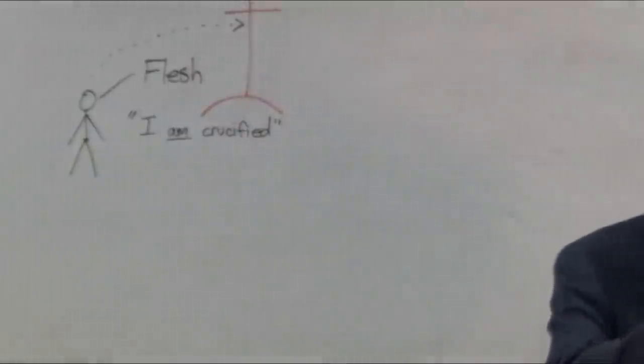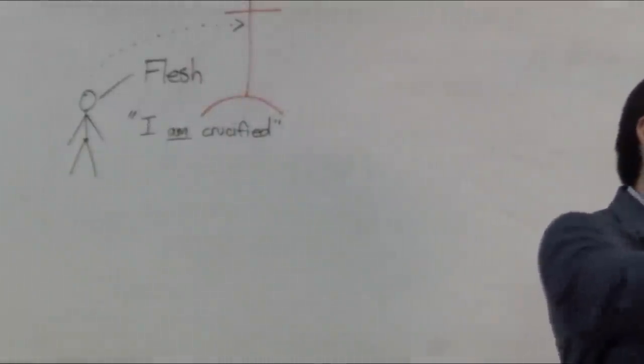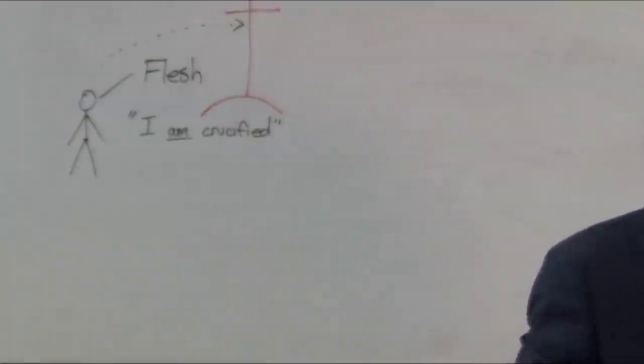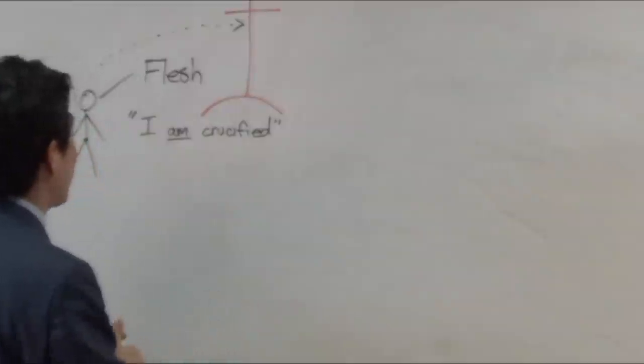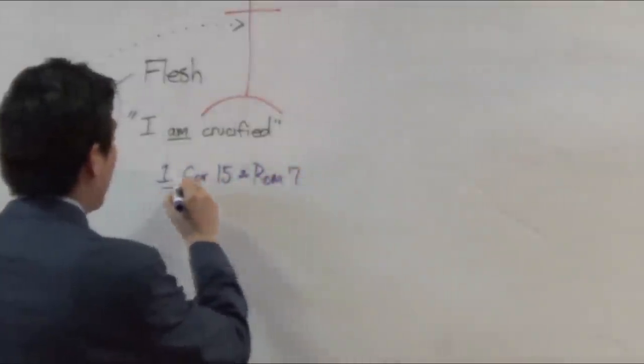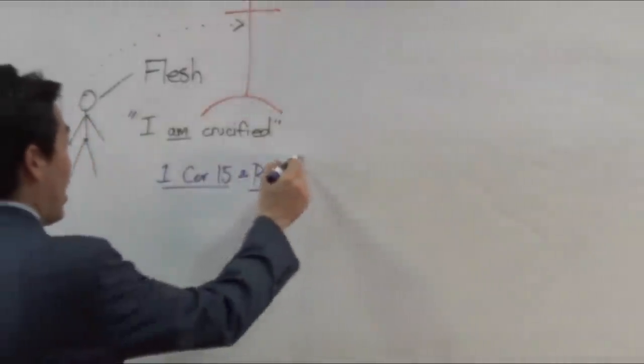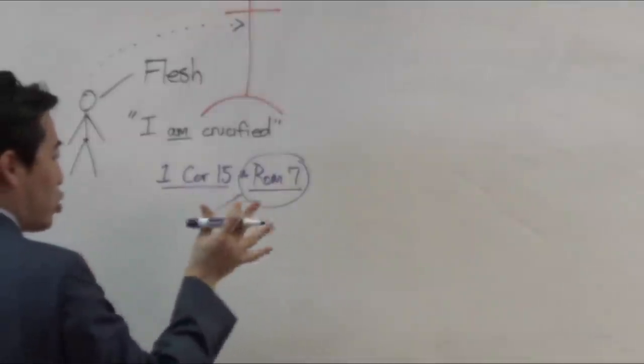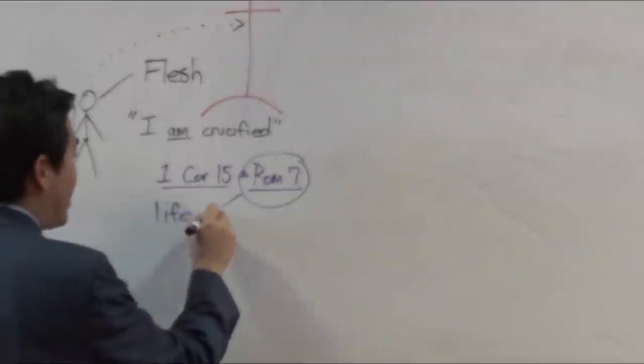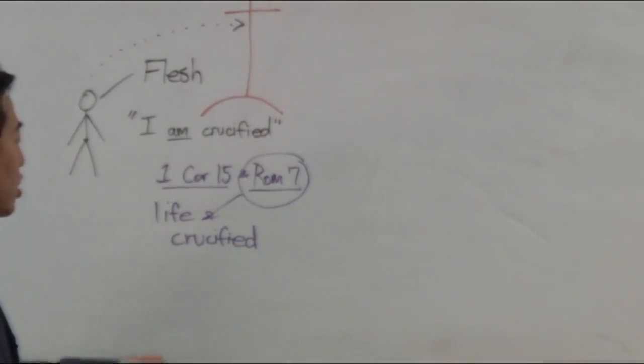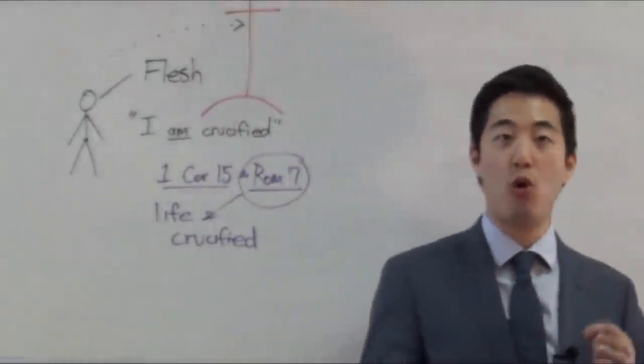So when you live a crucified life, when you kill the things of the sins of your flesh, this was not at the past at your salvation. Do you understand that fact? It's present tense right now in your life. You have to keep dying. We'll look at one example here. Keep your hand at Galatians 2 because we're going to be commenting here all the time. Go to 1 Corinthians 15, please.